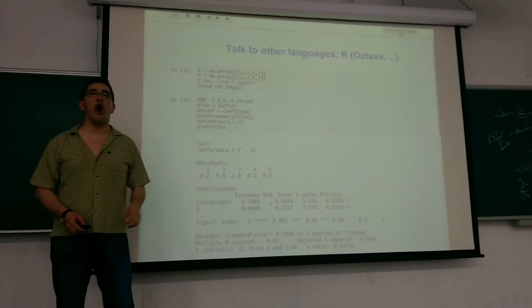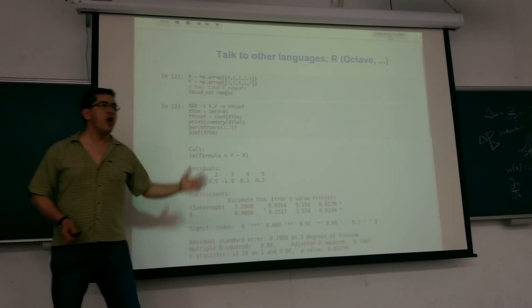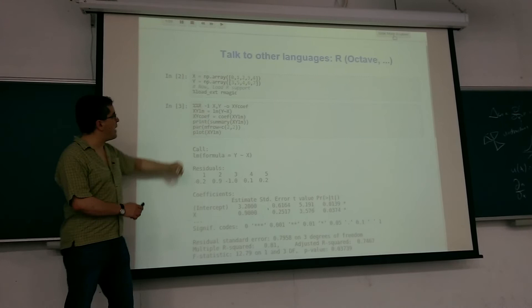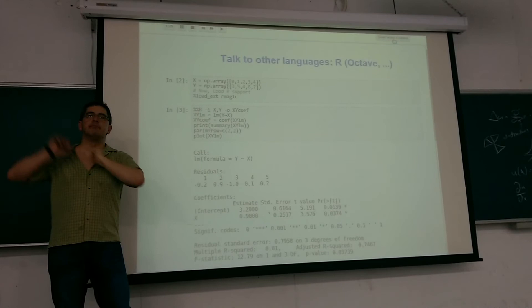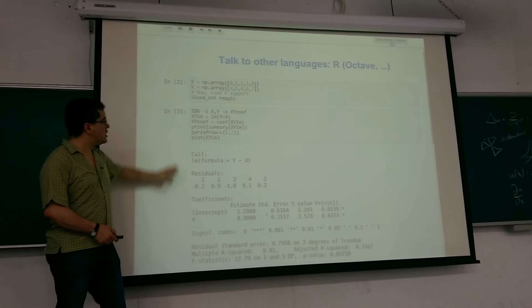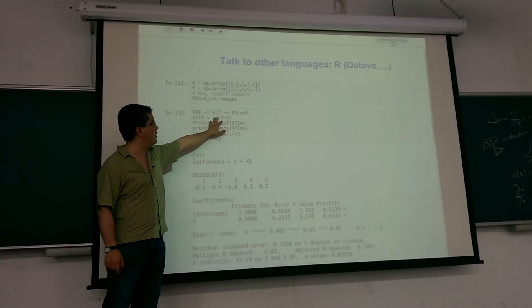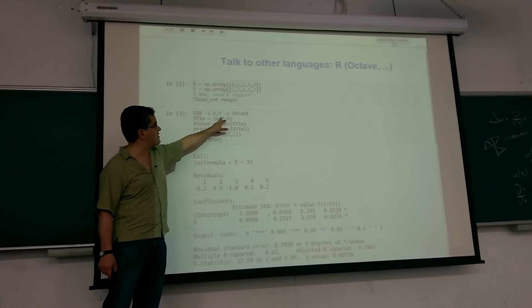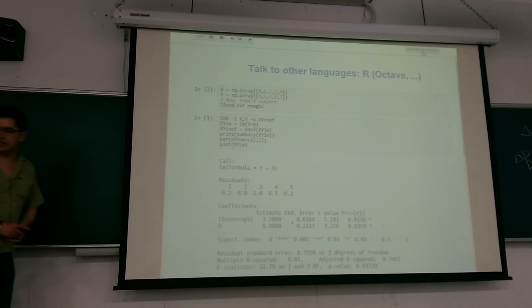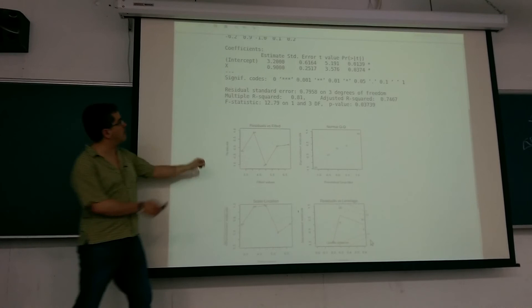For example, R — a very good language for statistics, more widely used in statistics than Python. In IPython, if I say '%%R', I'm telling IPython the next chunk of code is not Python — it's R. Run it in R and give me the answers back, so I can use R while working in Python. This block computes a simple linear model — y as a function of x — printing the summary and plotting the results.